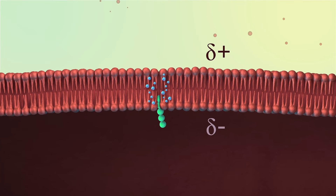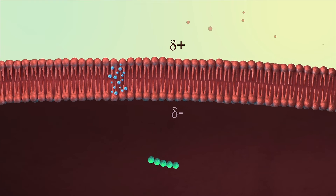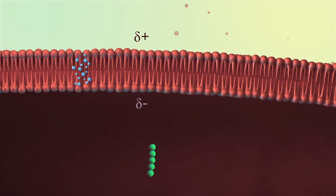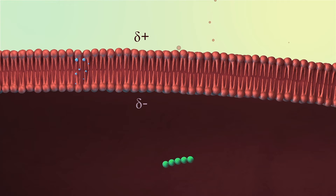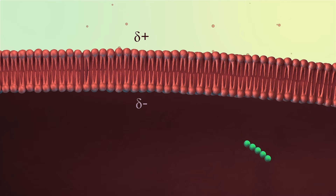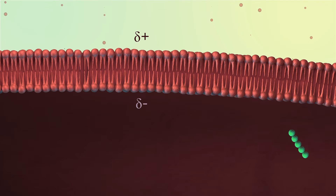As the CPP moves into the cytosol, it brings positive charges inside the cells. This dissipates the strong negative plasma membrane potential and the water pore collapses. The formation of water pores is therefore transient and does not affect cell viability.